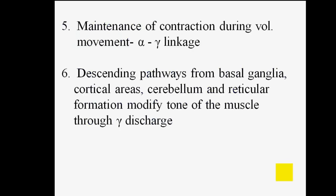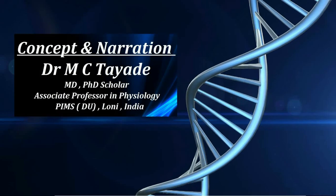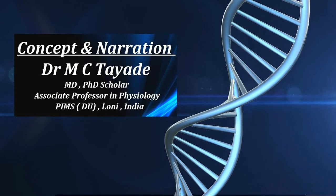Two additional important functions are maintenance of contraction during volitional movement via alpha-gamma linkage. Additionally, descending pathways from the basal ganglia, cortical areas, cerebellum, and reticular formation modify the tone of the muscle through gamma discharge — this is the alpha-gamma linkage.